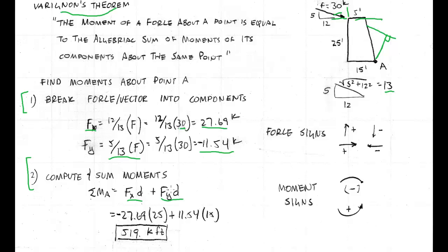The moment around A due to the Y component is Fy times D. It's 11.54 times 15. This distance here to here, because of the line of action and the perpendicular, is 15.